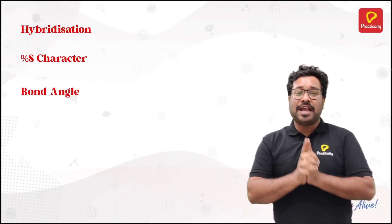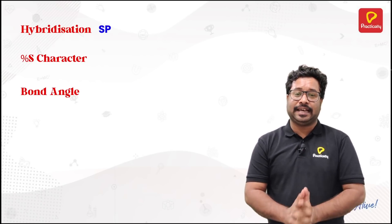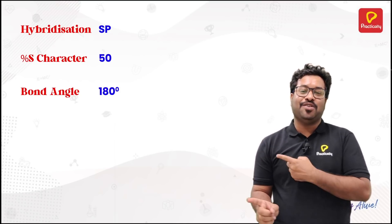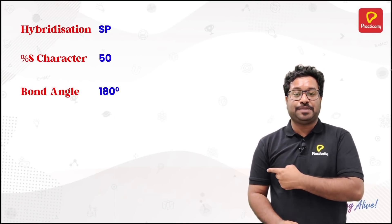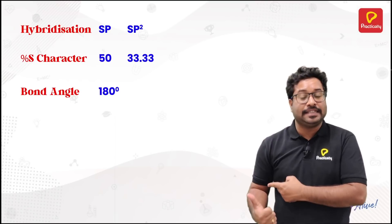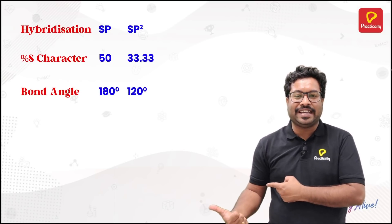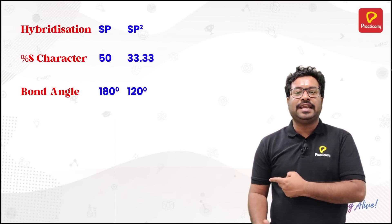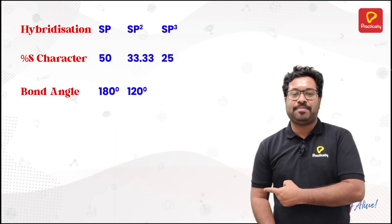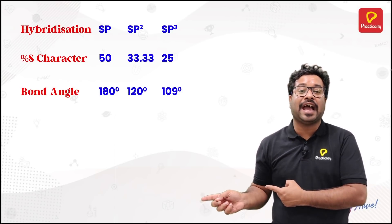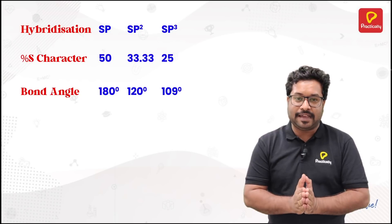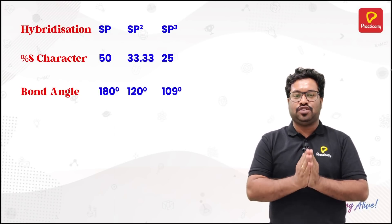For example, SP hybridization has a percentage S character of 50% and its bond angle is 180 degrees. Similarly, for SP2 hybridization, percentage S character is 33% and the bond angle is 120 degrees. For SP3 hybridization, the percentage S character is 25% and bond angle is 109 degrees. The same is applicable for other hybridizations.